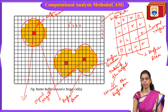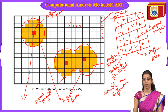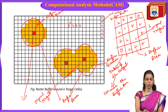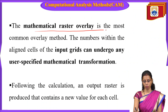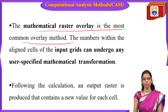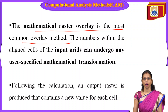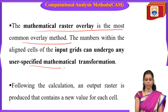In previous lectures you saw vector data using point, line, polygon — there is no grid sense, just buffer around the point, line, and polygon. Here, because the data is in raster format — in grid format — it covers the grids. Center point, around the grids it will cover. The mathematical raster overlay is the most common overlay method — it is mathematically overlaid and a very common method.